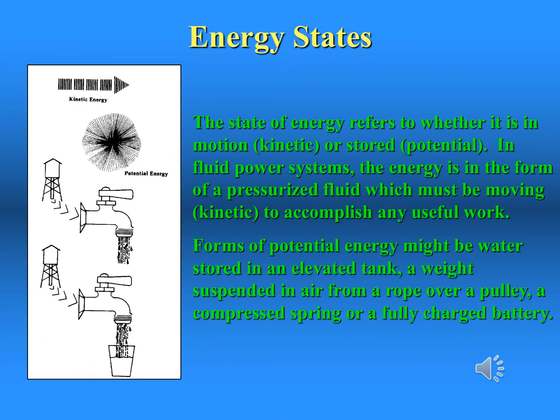Each energy state or form can be converted or changed into other forms. Although there are many specific types of energy, the two major forms are kinetic energy and potential energy. Kinetic energy is the energy in moving objects; examples include mechanical energy and electrical energy.